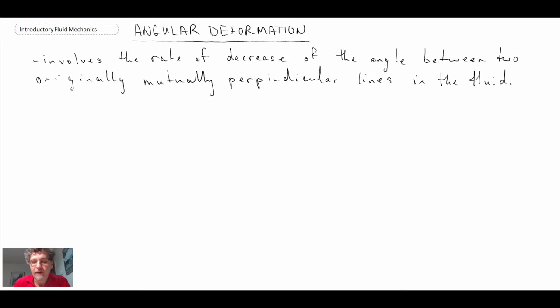The definition of angular deformation is the rate of decrease of the angle between two originally mutually perpendicular lines. And we'll define that angle as being gamma.